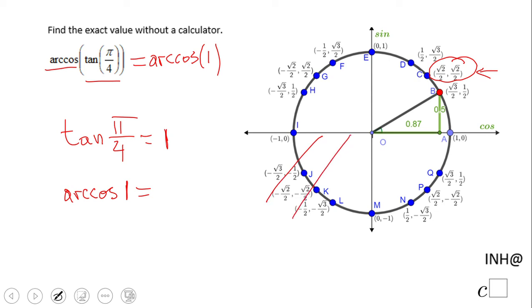When we talk about arc cosine, the range is quadrants 1 and 2 only.